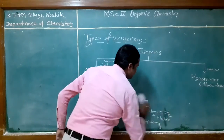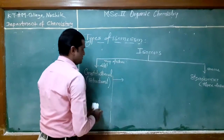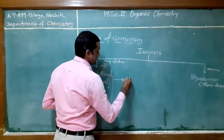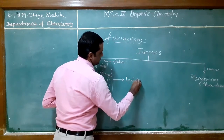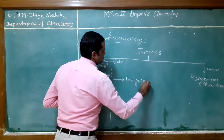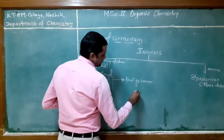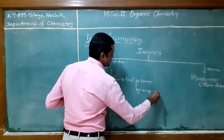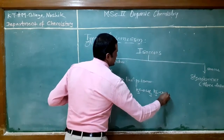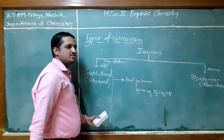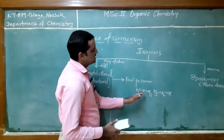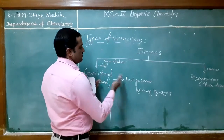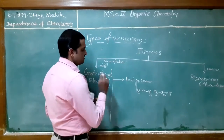The third type of isomer observed in constitutional isomers is the functional group isomer. For example, the molecular formula C2H6O gives two different structures: one is dimethyl ether and another is ethanol. The functional group is totally different. Such types of isomers are called functional group isomers.